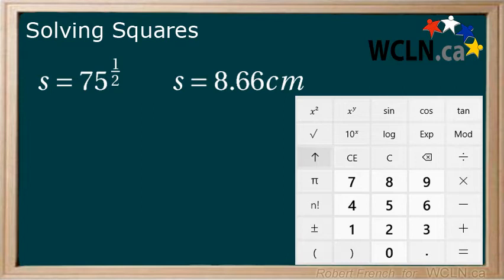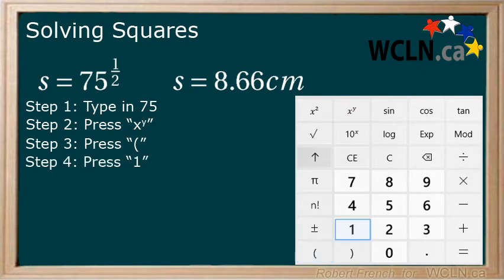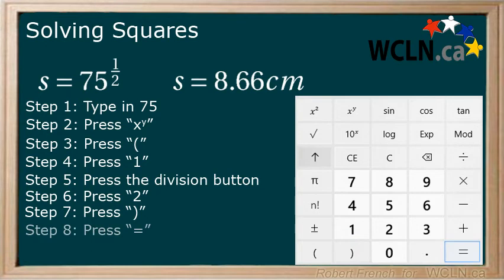If you don't use brackets, you are actually typing in 75 to the power of 1 divided by 2, which is why you are getting the wrong answer. Type in 75. Find and press the exponent button. This is the button that has an x with an exponent of y. Type in a left bracket. Type in 1. Type in the division button. Type in 2. Type in a right bracket. Press the equal button.